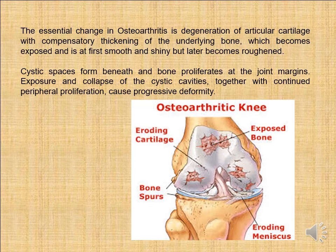There are cystic spaces from beneath the bone, and bony outgrowths form at the joint margin. The exposure and collapse of the joint cavity together with continued peripheral proliferation cause progressive deformity. Osteoarthritis may result in severe deformity to the surface of the joint, leading to very severe irregularity.